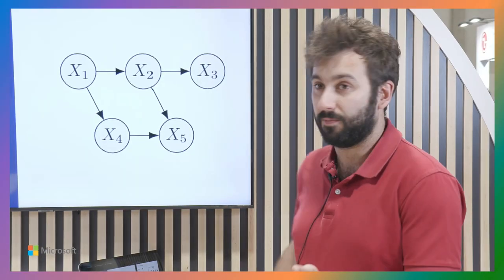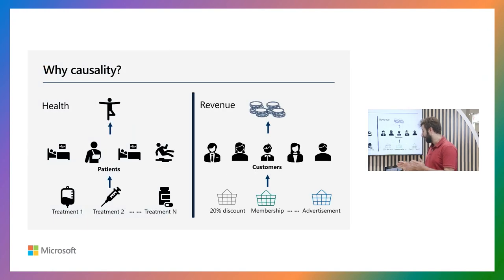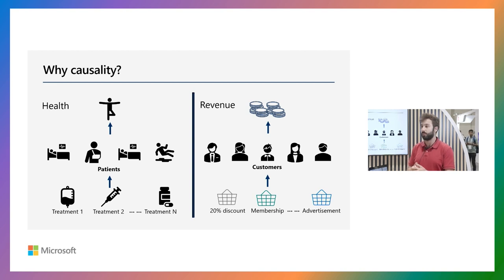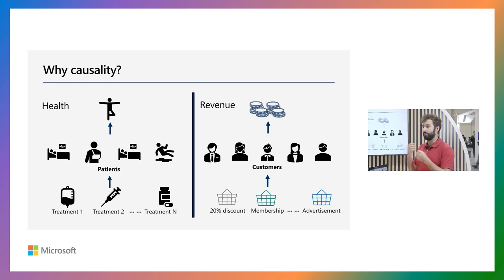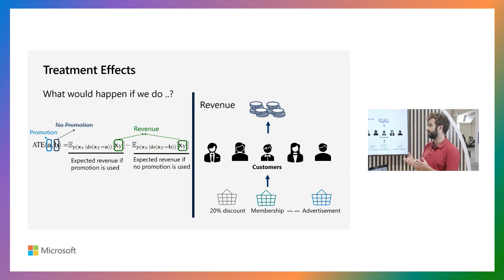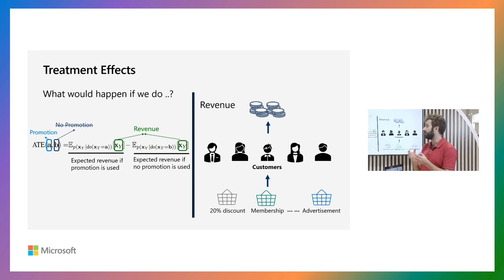Let's motivate this first — why do we do causality and what does that mean? One question is really how do we assign certain decisions to actions that we want to perform? For example, in a medical scenario, we want to assign treatments to patients: what is the best possible treatment to optimize the health outcome? Or in a sales scenario, we have certain promotions or discounts we can offer to different customers, and we want to figure out what we can do to maximize revenue for the company. One tool we can use is causality, where we estimate so-called treatment effects — estimating the question of what would happen if we do something.